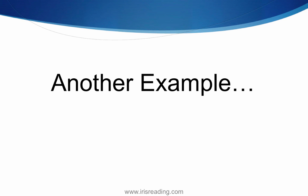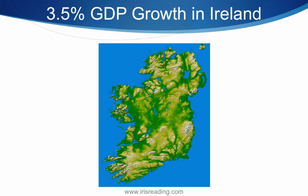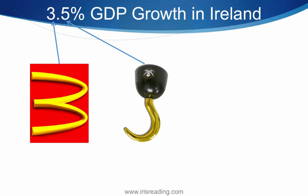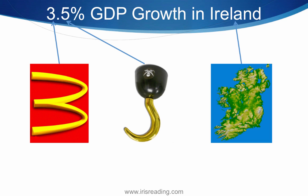Let's go over another example. When doing a workshop with a financial institution, one of the researchers said they had to remember a lot of numbers related to GDP growth in various countries over the past year. Let's say you have an example like 3.5% growth in GDP in Ireland. What do we have? We have a 3, which has to be represented by McDonald's in whatever story we come up with, and a 5 — something to do with a hook. We also need something related to Ireland.